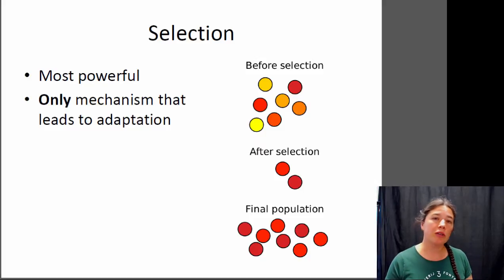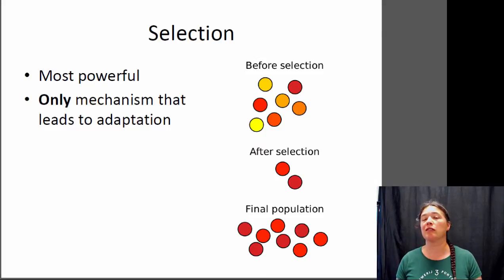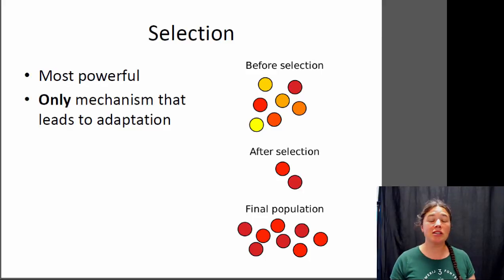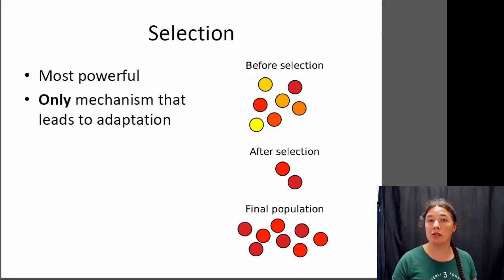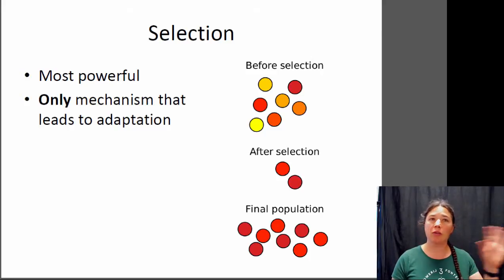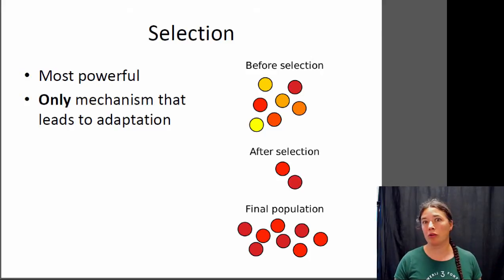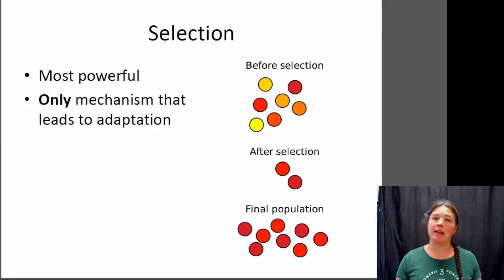It is also the only mechanism of evolution that actually leads to adaptation. An adaptation is a trait that makes an organism more well-suited to its particular environment. None of the other mechanisms of evolution that we discussed can lead to adaptation — only selection can do that.